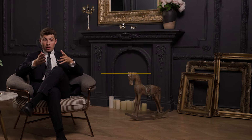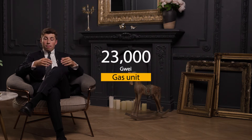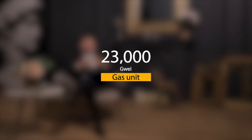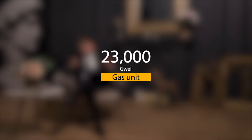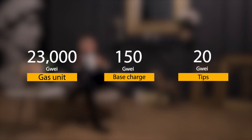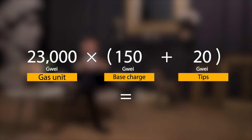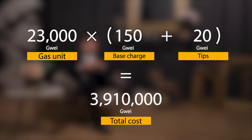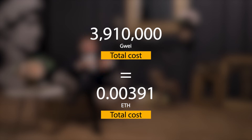As an example of the total fee formula, suppose I want to send you one Ether and the average gas required to transfer Ether on the Ethereum network is 23,000 Gwei — that would be my gas limit. The base charge is 150 Gwei, but I want to reach you quickly, so I add a 20 Gwei tip. The total cost formula gives us 23,000 times (150 plus 20), equaling 3,910,000 Gwei or 0.00391 Ether. So I'd contribute 1.00391 Ether to the network and you'd receive one Ether.